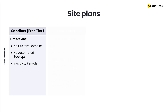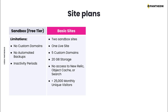Next, we have basic site plans. Basic site plans are for small individual sites and non-mission critical sites. They come with a limit of five custom domains, 20 gigabytes of combined storage for your database and files, and they do not provide access to New Relic, Object Cache, or Pantheon Search. Traffic figures for basic site plans must be below 25,000 monthly unique visitors.